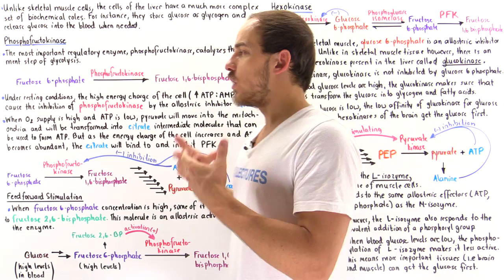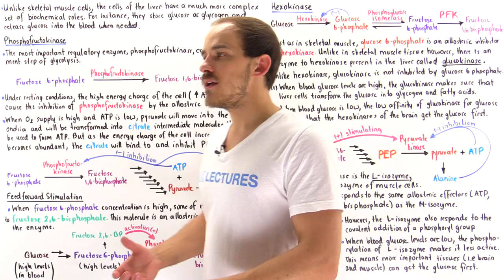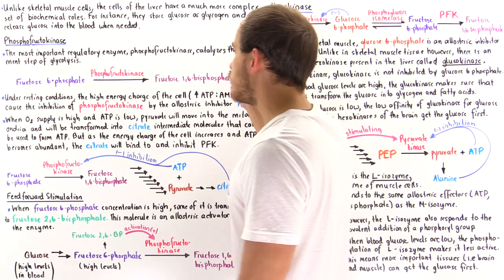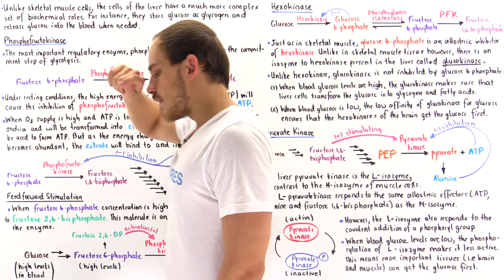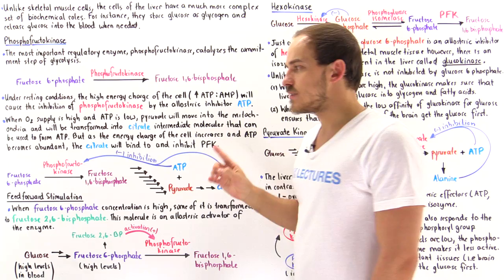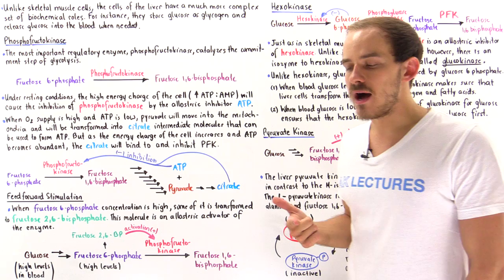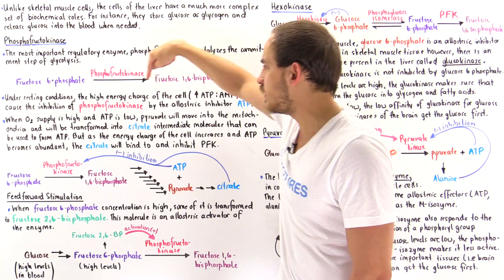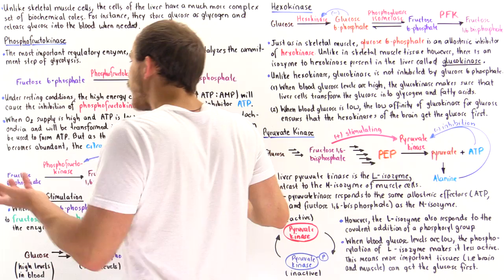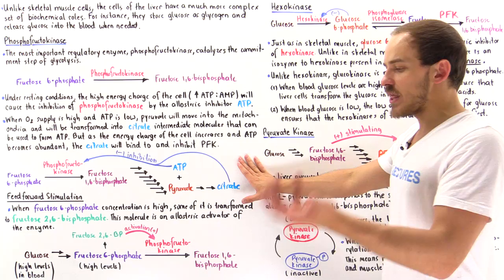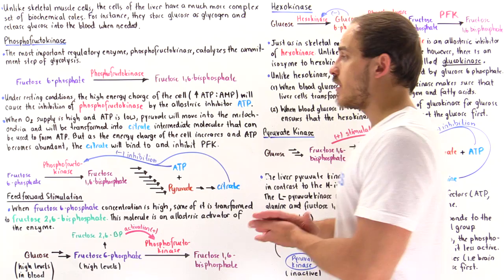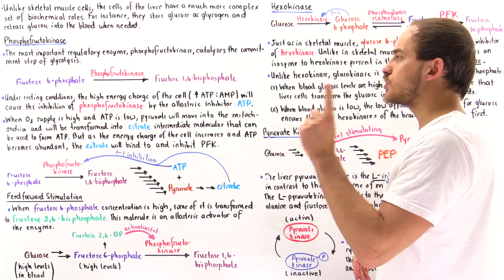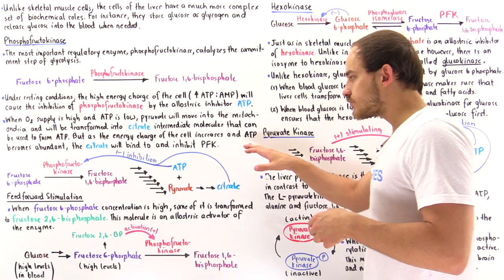Let's begin with phosphofructokinase. Once again, phosphofructokinase is the most important regulatory enzyme. It regulates the commitment step, transforming fructose 6-phosphate into fructose 1,6-bisphosphate. Let's remember how skeletal muscle cells regulate this enzyme. They use ATP and AMP molecules. If we have a high energy charge in the cell — a high ratio of ATP to AMP — and we're resting, we have too many ATP molecules, so we don't want to produce more. Phosphofructokinase will be inhibited by that large concentration of ATP, and ATP acts as an allosteric inhibitor.